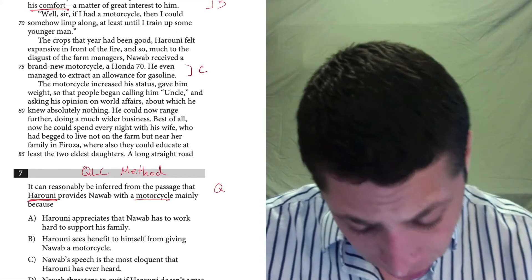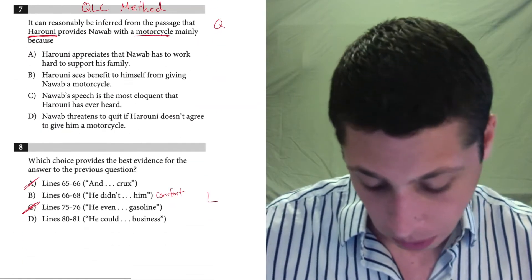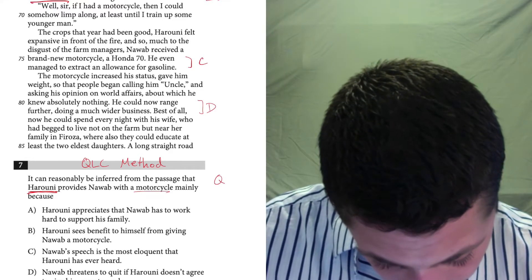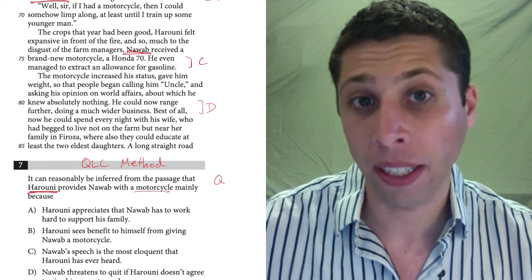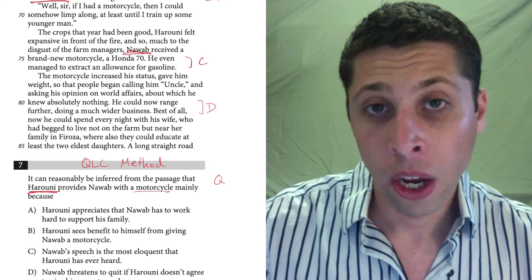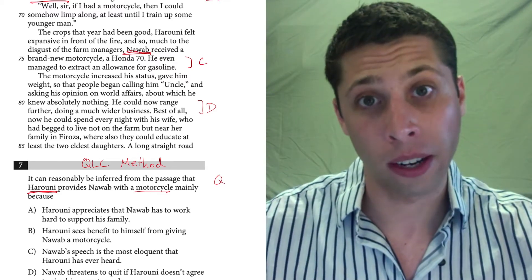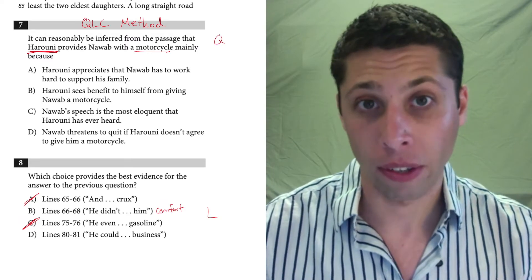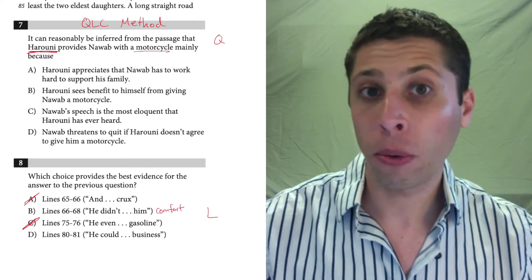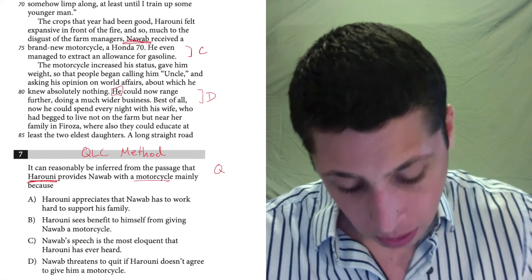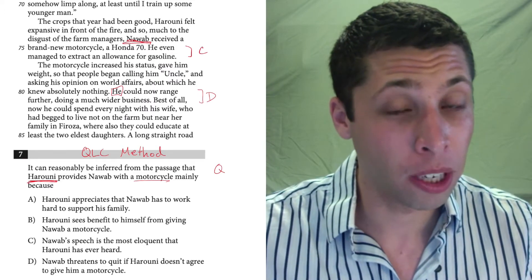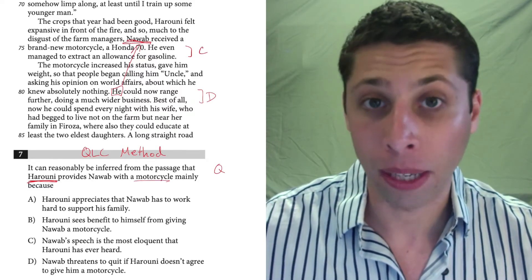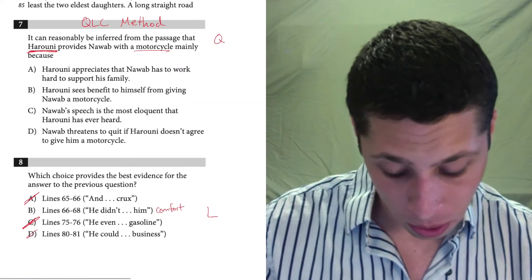And 80 to 81, he could now range further doing a much wider business. Okay, again, that's not even about Haruni. This is about Nawab. Nawab, he here is talking about Nawab. So this is a good example where sometimes you might need to read a little extra beyond the line references. When we have a line reference in a question, we're supposed to read plus one sentence on either side. When the line reference is in the answer choices, like these evidence ones, we usually can just stick to the line reference. We don't need to read extra. But one place where I do is when I have these kind of random pronouns that I don't know who they're referring to. It could refer to Haruni, it could refer to Nawab. If I read back a little, it turns out it's about Nawab, so this doesn't help me. The question is really about Haruni's reasoning, so I don't really know what this has to do with anything.